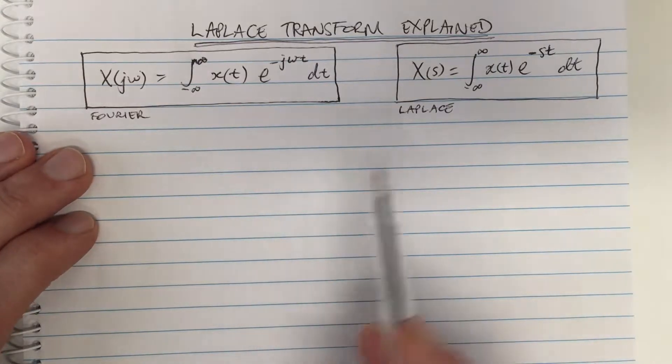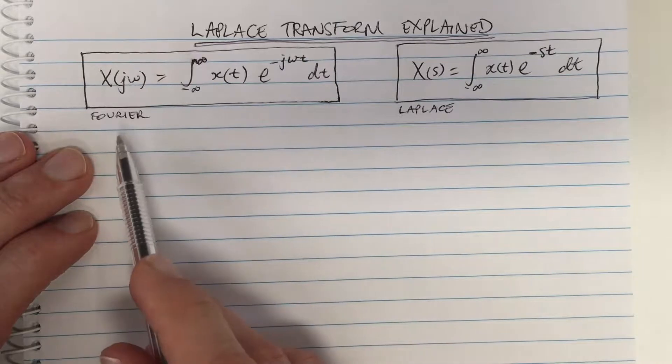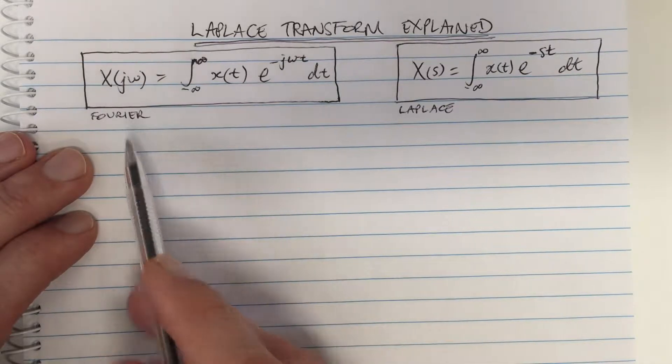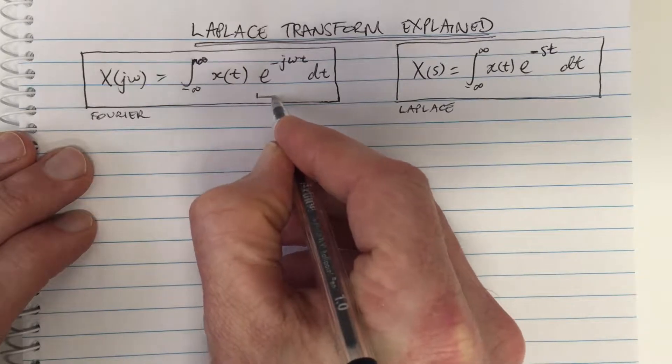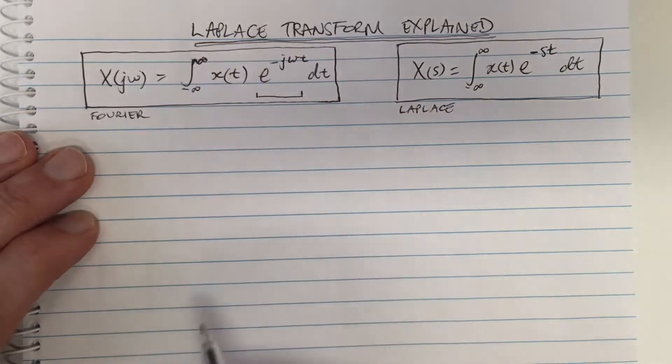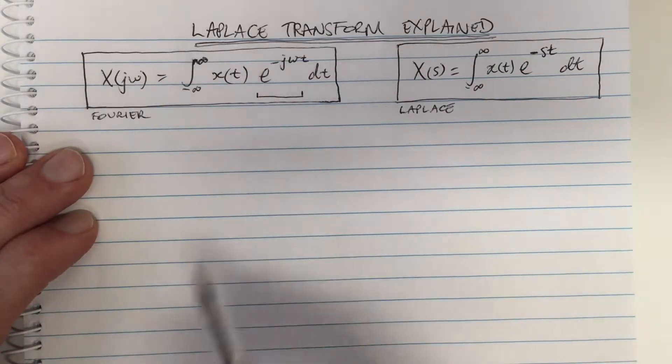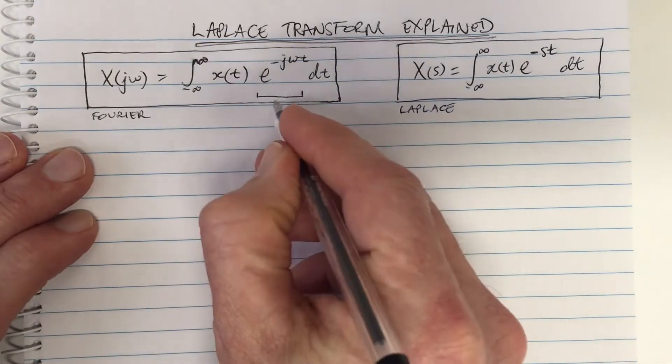To explain the Laplace transform, let's first consider the Fourier transform and remind ourselves that the Fourier transform involves representing waveforms in terms of the basis functions which are complex exponentials.